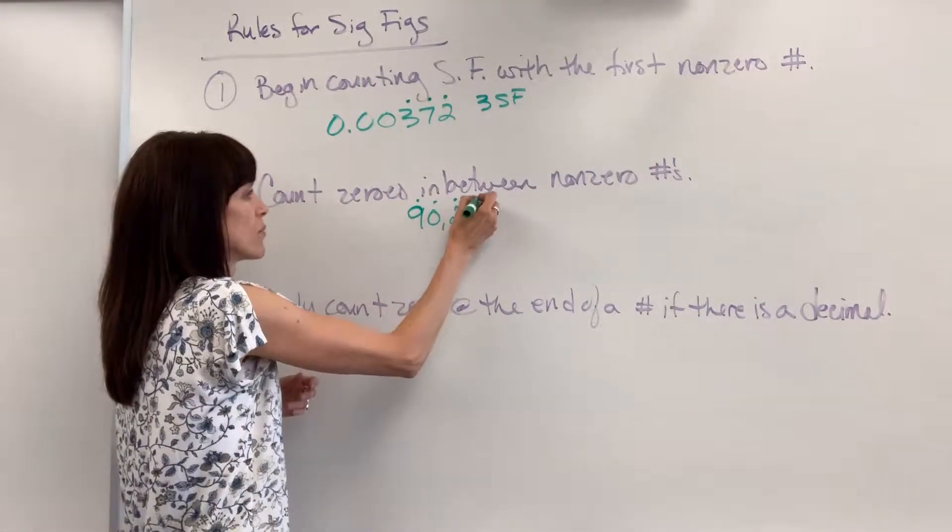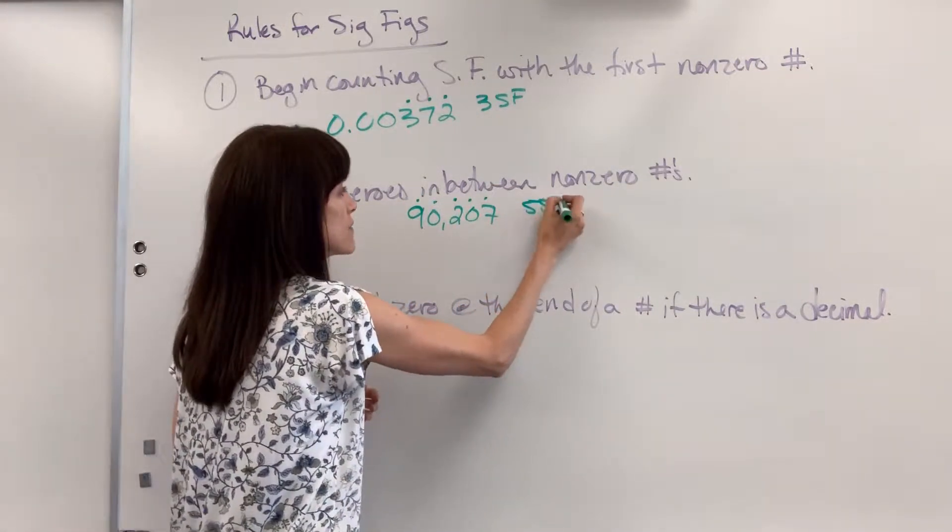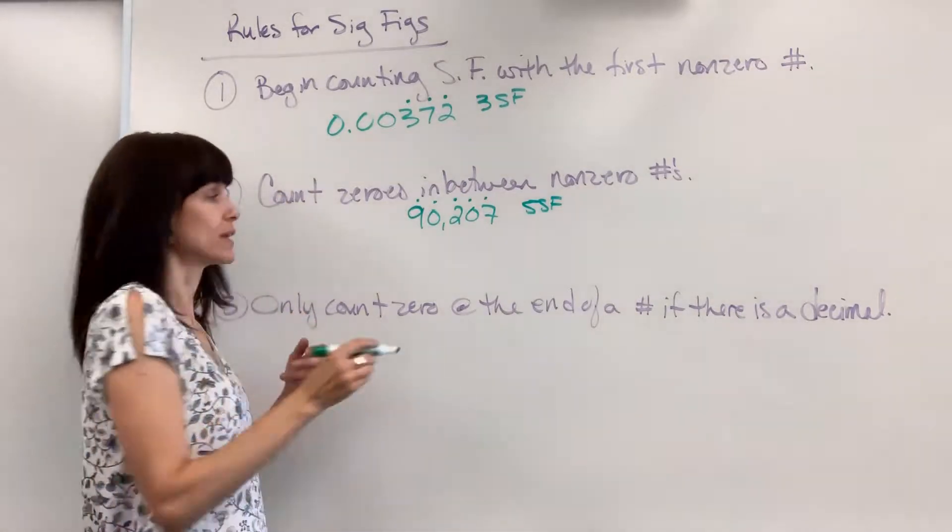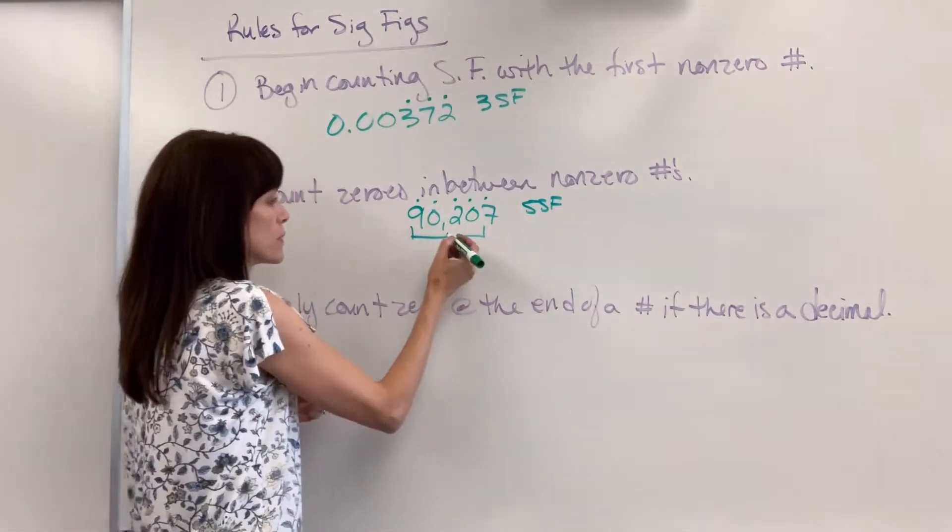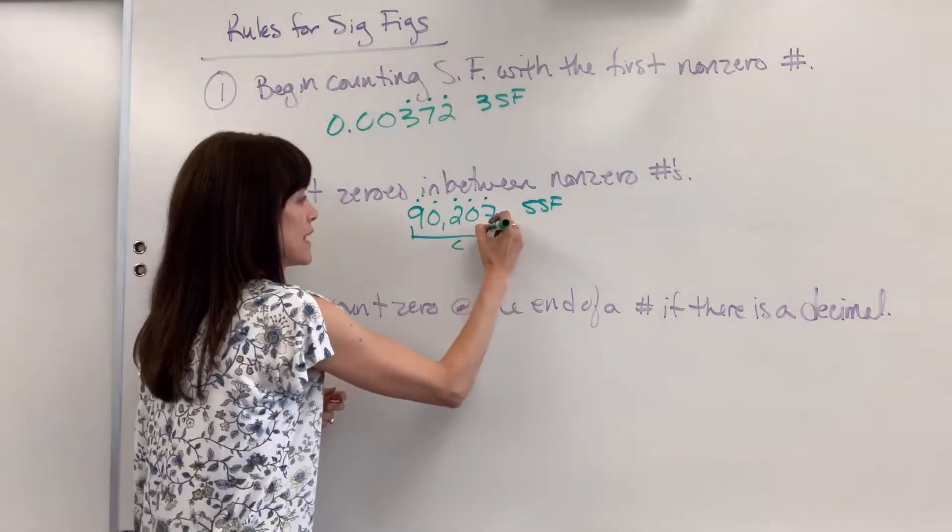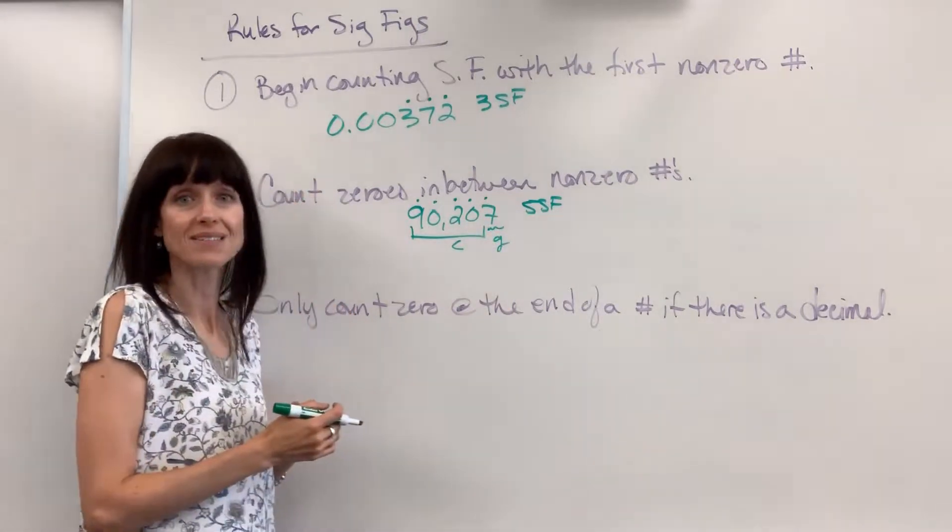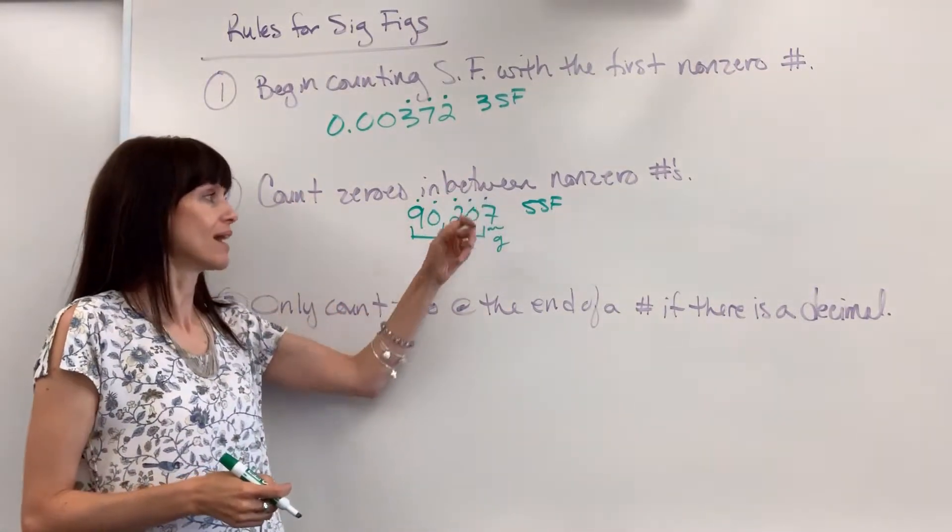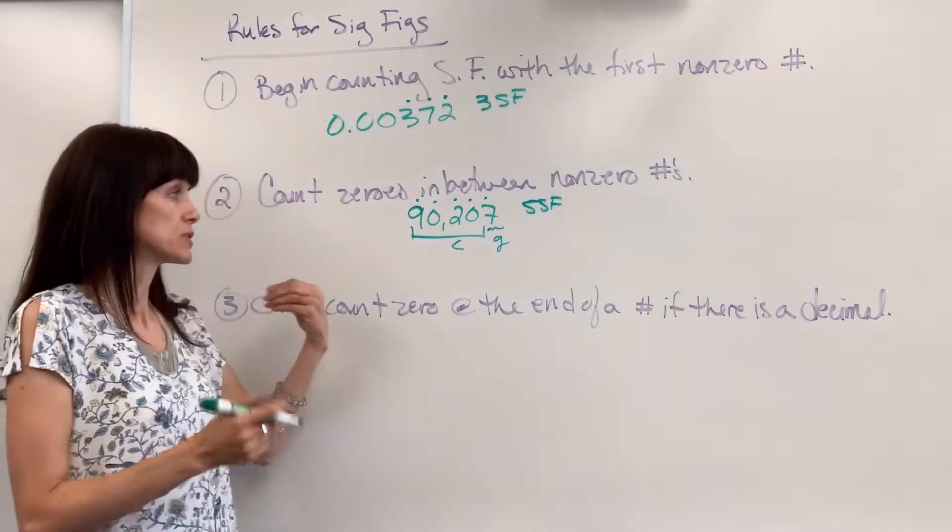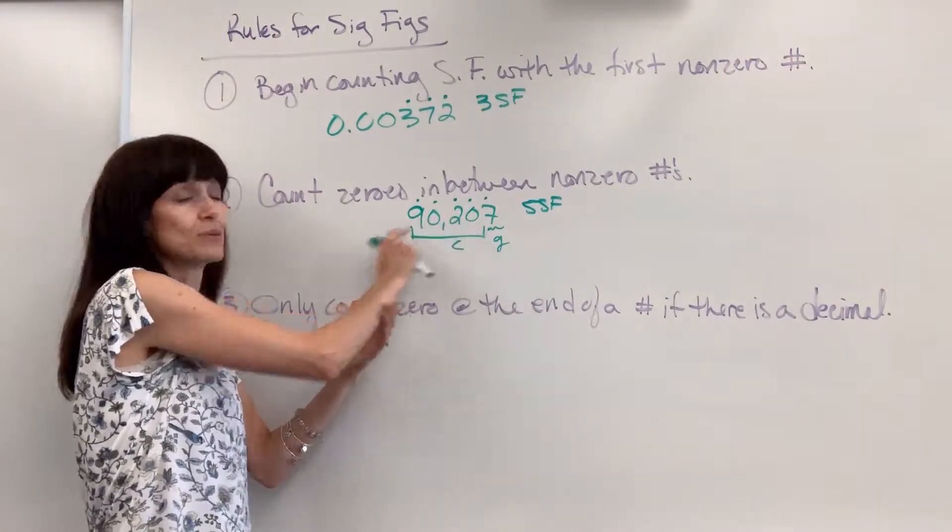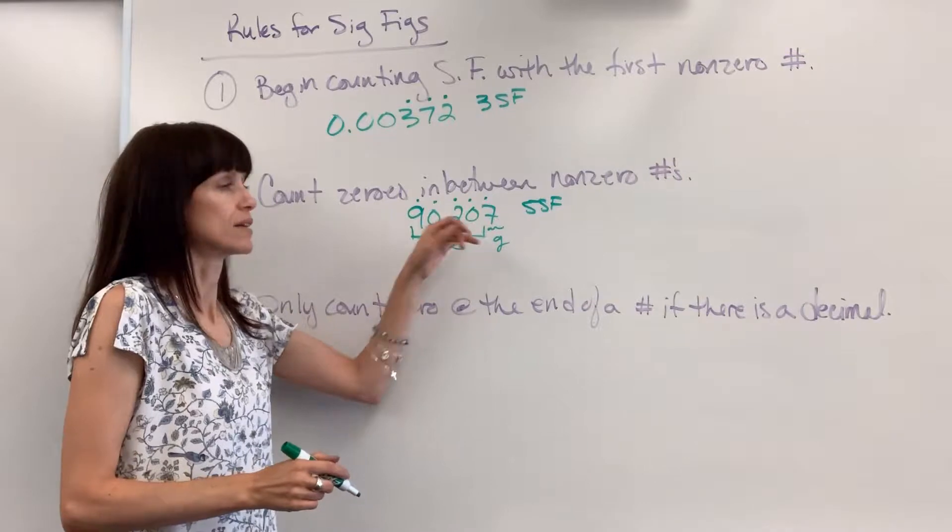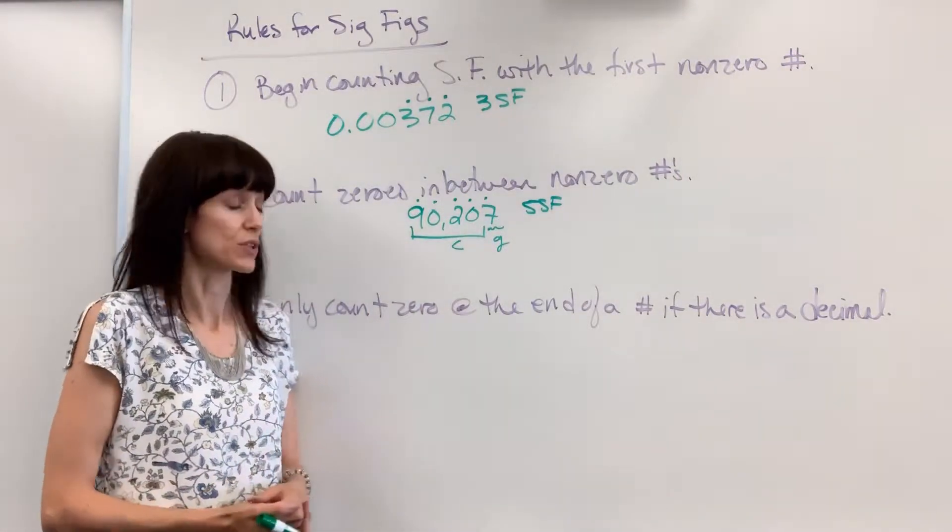This would have one, two, three, four, five. Five sig figs. And little reminder, these first four numbers are certain. This last number, that's the guess. So this could be an eight, a nine, maybe a five or a six. But with certainty, we know the nine, zero, two, and zero. The 90,200 down to that tens place. That's what we know for certain.